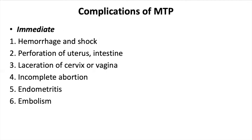Complications of MTP can be immediate or delayed. Immediate complications include: hemorrhage and shock, perforation of uterus, laceration of cervix or vagina, incomplete abortion, endometritis — that is inflammation of the endometrium — and embolism.